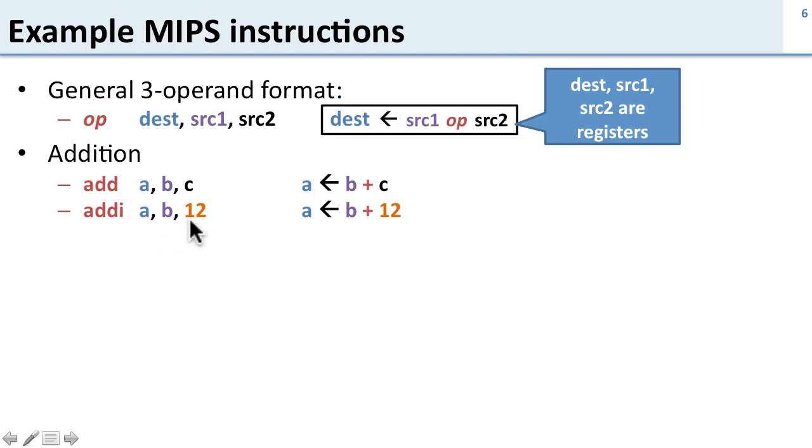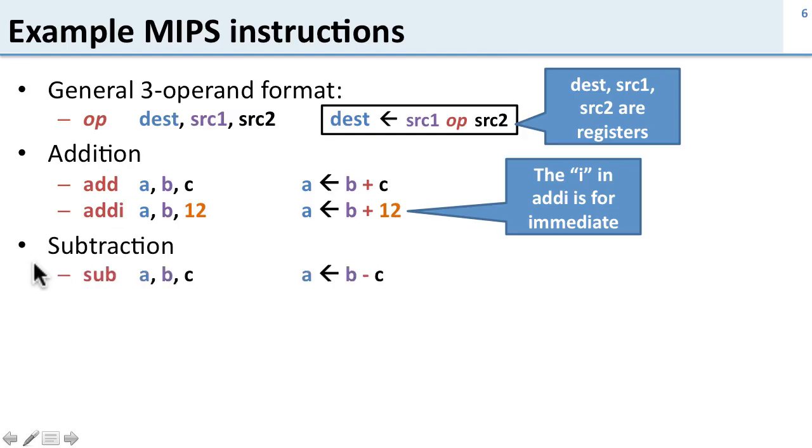So this is an immediate value and instead of having two registers it takes one register as the source and one constant or immediate value as the source. And so this is going to do b plus 12 and store it into a. So here the i in the instruction stands for immediate. The immediate value is a constant value that gets added right in. And of course subtraction looks the same. Subtract a b c is going to do b minus c and store it into a.